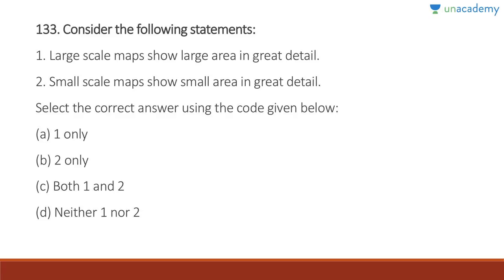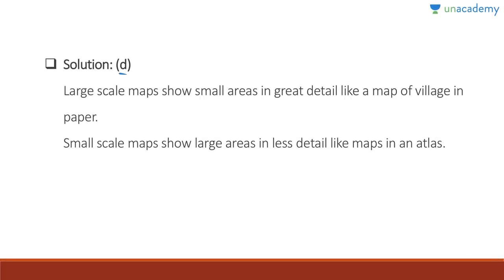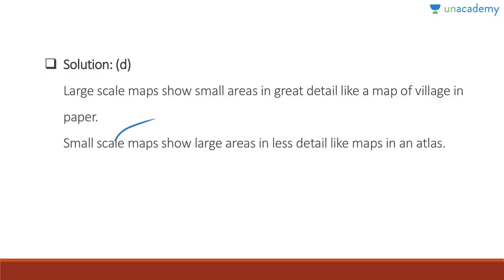Question 133: Large scale maps show large areas in great detail — absolutely wrong; they show small areas in great detail, like maps of villages. Small scale maps show large areas in less detail, like maps in an atlas. Answer is D, neither one nor two. Large scale maps show small areas in great detail, and small scale maps show large areas in less detail.